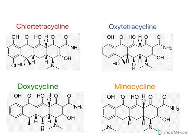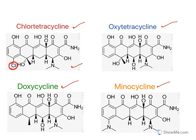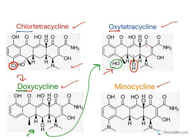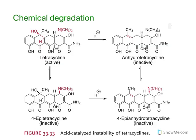Four important tetracyclines are chlorotetracycline, oxytetracycline, doxycycline, and minocycline. Chlorotetracycline differs from tetracycline by a chloro substitution at C7. Oxytetracycline has a hydroxy substitution at the fifth position. Doxycycline — 'doxy' meaning deoxy — is derived by removing the hydroxy group at C6 from oxytetracycline. Minocycline has all substitutions at C6 removed and a dimethylamino group added at C7.